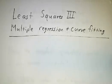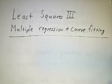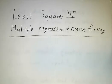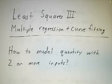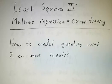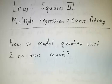In the last video, we talked about linear regression — finding the best line through a bunch of data. That's good for models where you have an output variable depending on one input variable. But what do you do if you've got an output variable that depends on two or more input variables? How can you model that, and how can you use linear algebra to find the best fit?